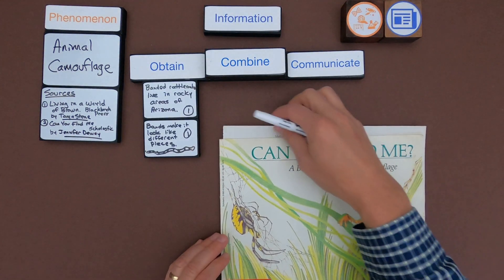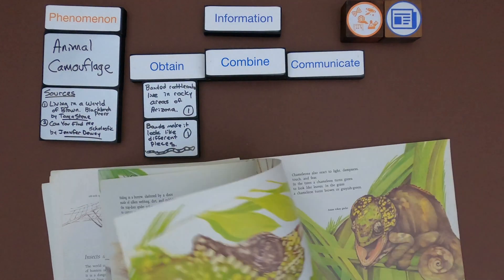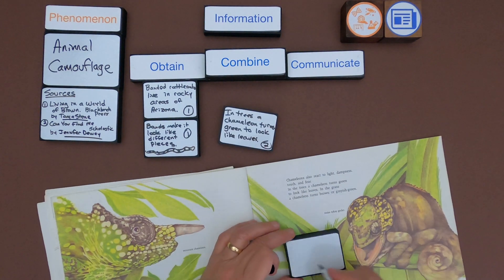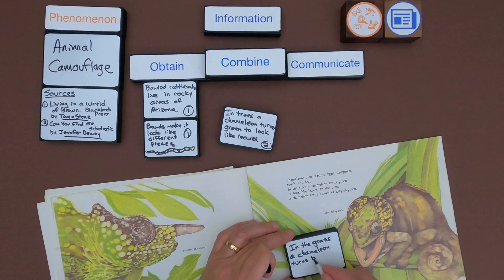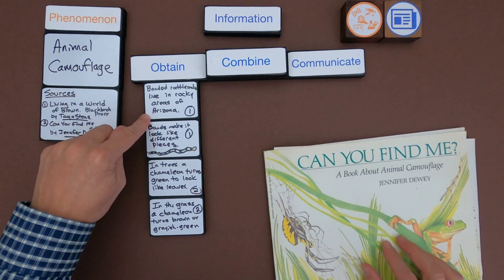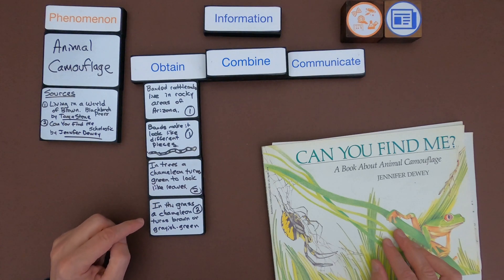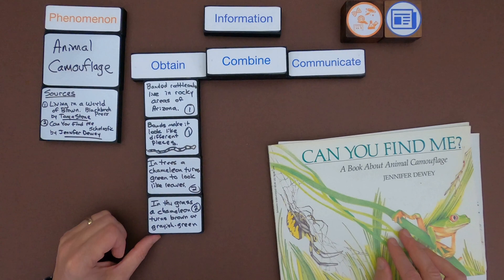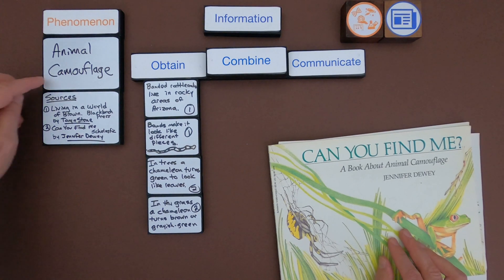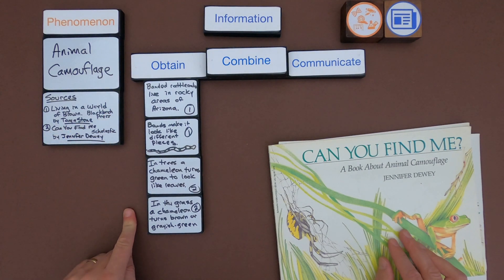And now let me look at some other interesting animal camouflage from the second time. Okay so from the first text I'm talking about the banded rattlesnake. It lives in rocky areas of Arizona and makes it looks like it has different pieces. So I wonder if predators can't see it. And then in trees a chameleon turns green to look like leaves. And in grass a chameleon turns brownish or grayish green. So you can see I'm also writing the numbers on it. And that's how I could go back and say this is where I found this information or this is the source of the information.